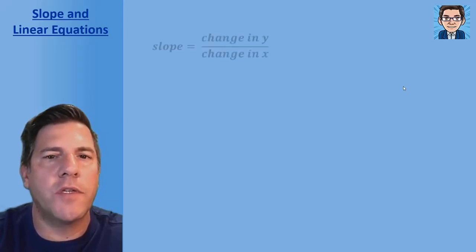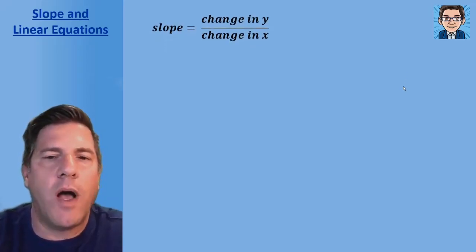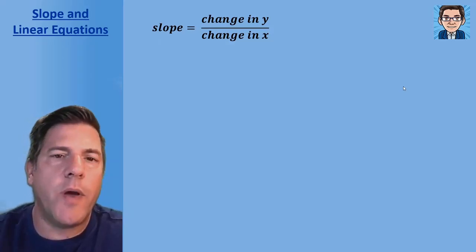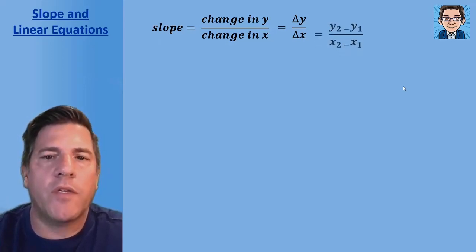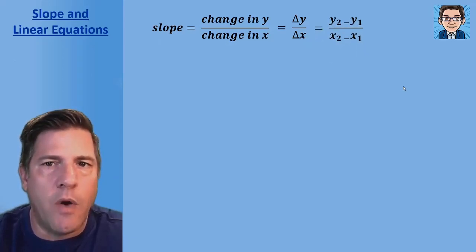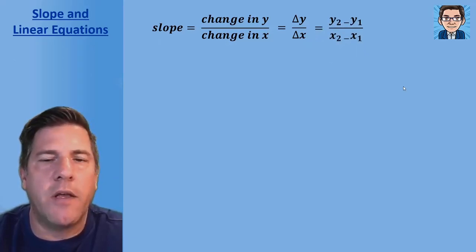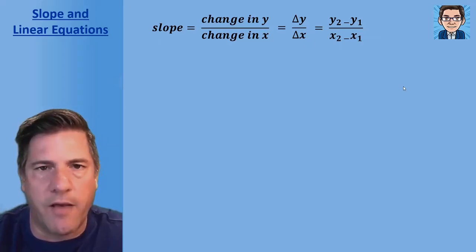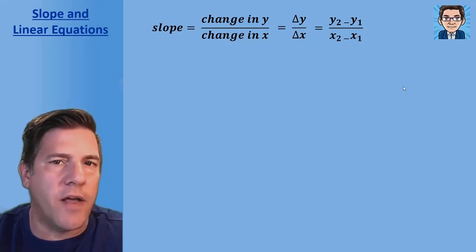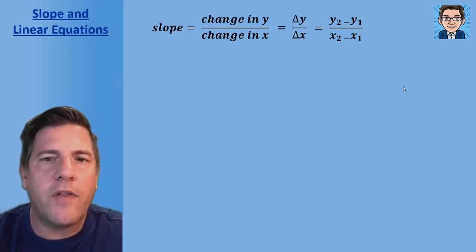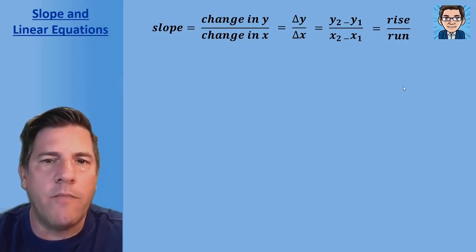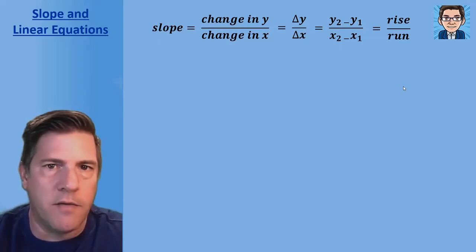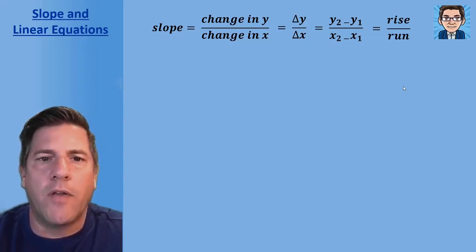Let's review slope. Slope is the change in y over the change in x. Another way we see that written is delta y over delta x — delta just stands for the difference or the change. You can also see it written as y2 minus y1 over x2 minus x1. Or graphically, it's referred to as the rise over the run — how much it changes up and down divided by how much it changes left and right.